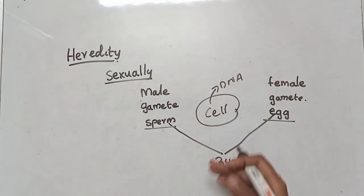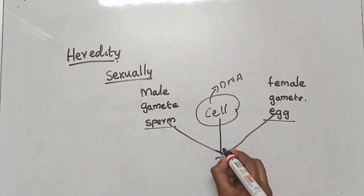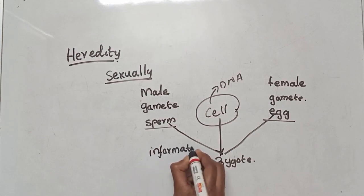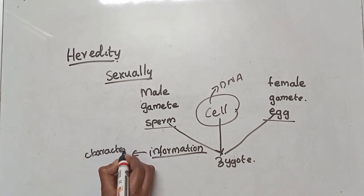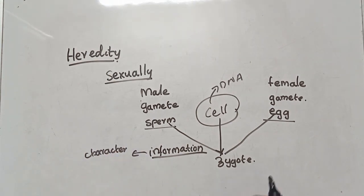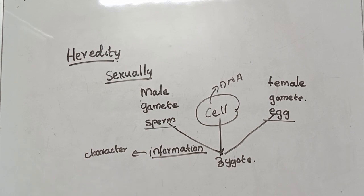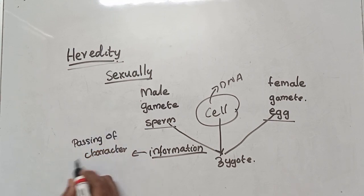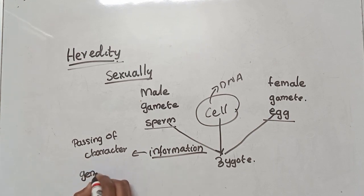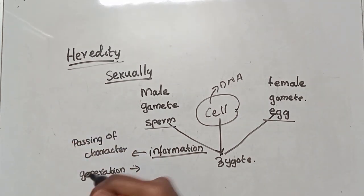In sexual reproduction, information is passed on. That information is basically characters. So, the passing of characters from one generation to the other is called heredity — passing of characters from one generation to the next.